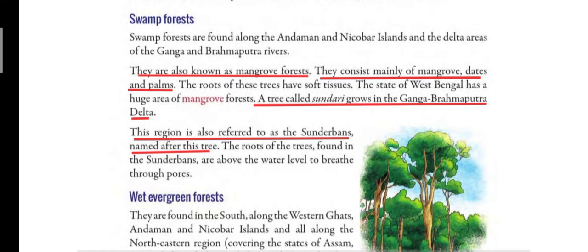A delta is a triangle-shaped structure formed at the mouth of a river. Swamp forests are found in the Andaman and Nicobar Islands and in the delta region of the Ganga and Brahmaputra rivers. They are also known as mangrove forests.